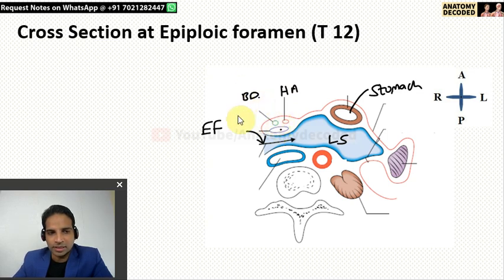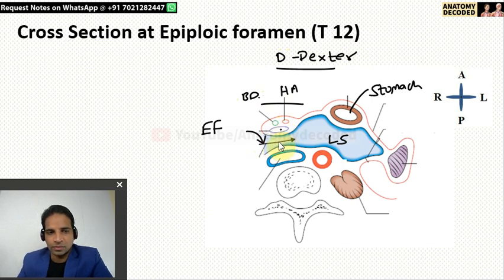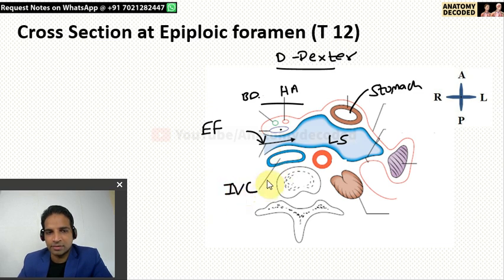To remember which structure is to the right and which is to the left: we can remember that the duct is dexter. The word 'dexter' refers to the right side. So on the right side there is the bile duct, on the left side there is the hepatic artery, and behind both these structures is the portal vein. The anterior relation of the epiploic foramen is the right free margin of the lesser omentum containing the portal vein, hepatic artery and bile duct. The posterior relation is the inferior vena cava, and behind which is the T12 vertebrae.